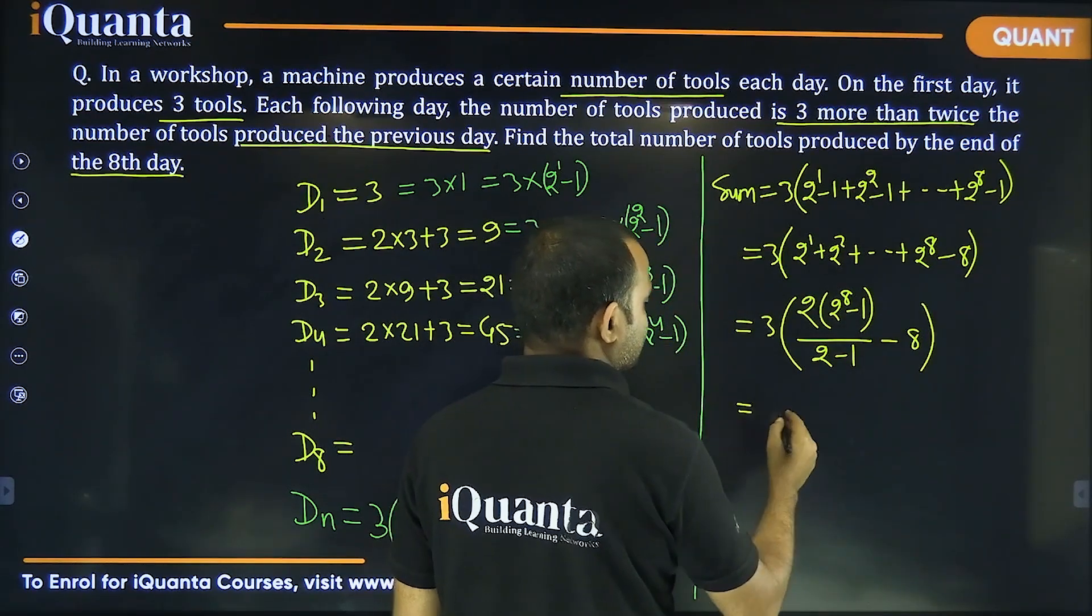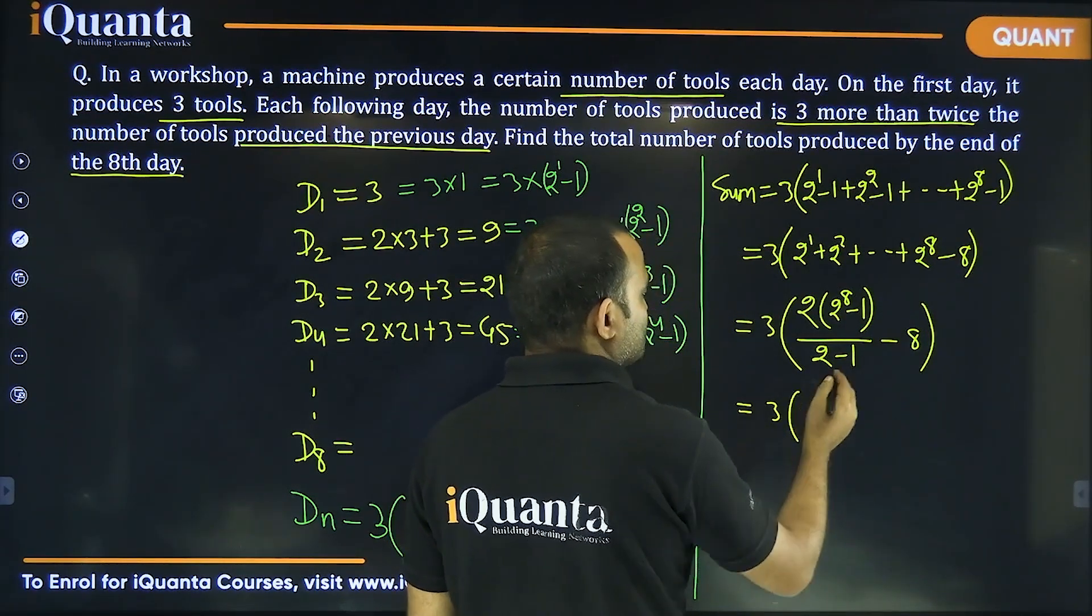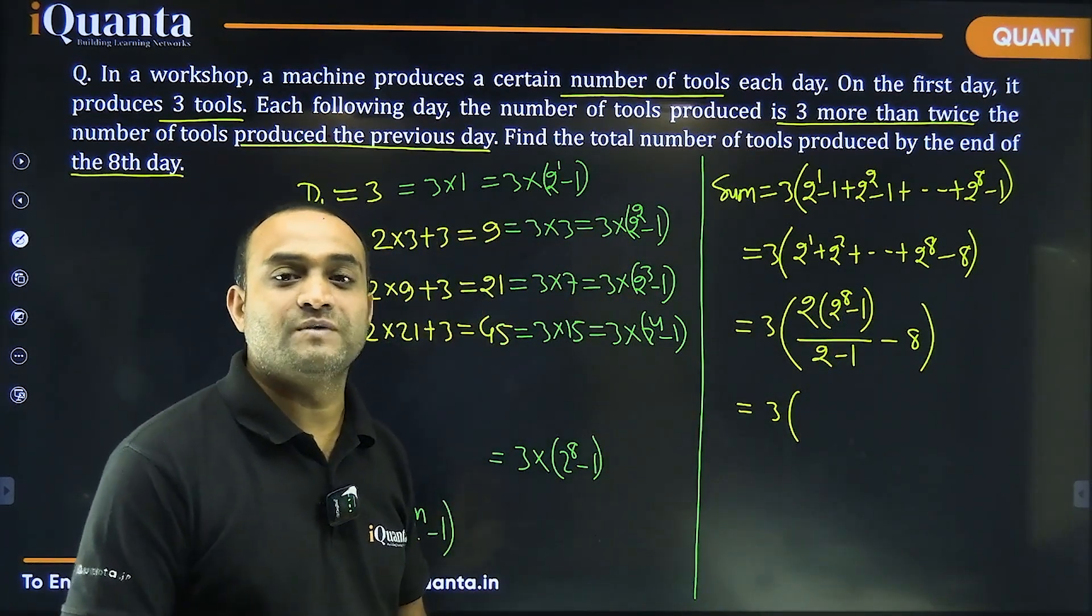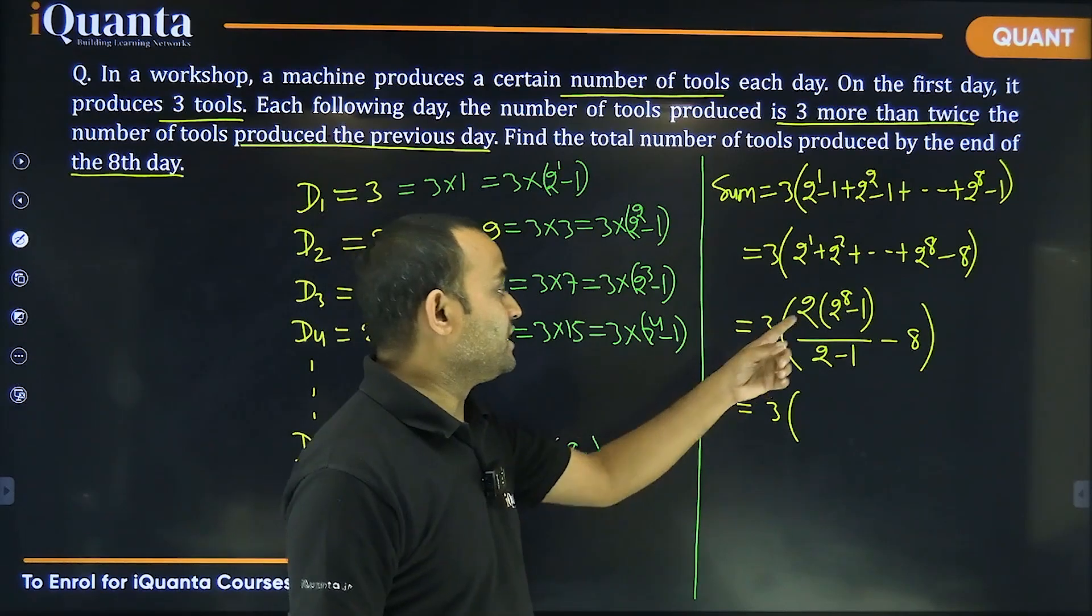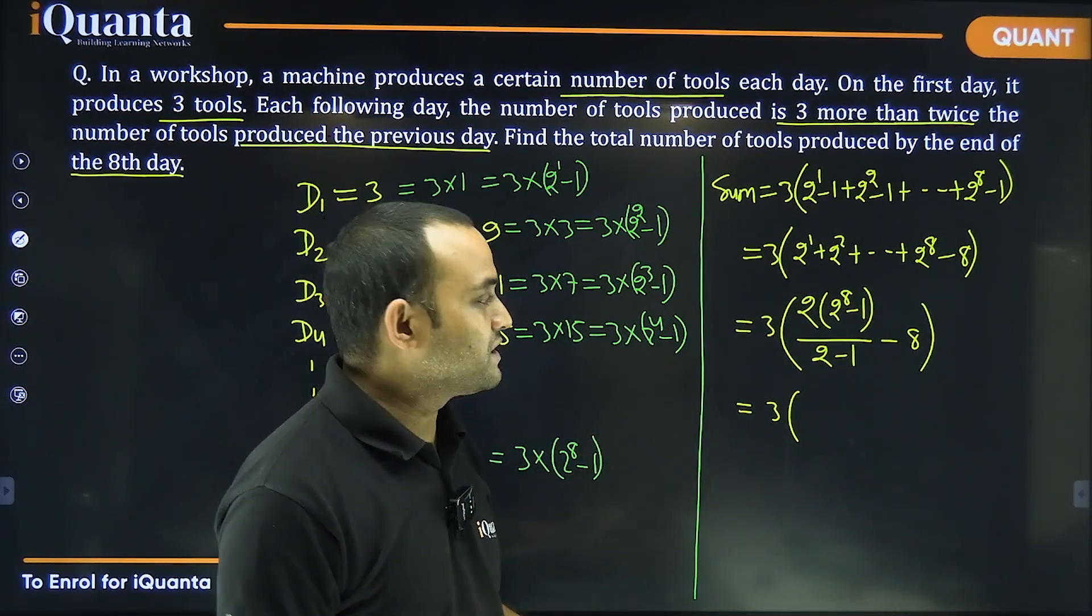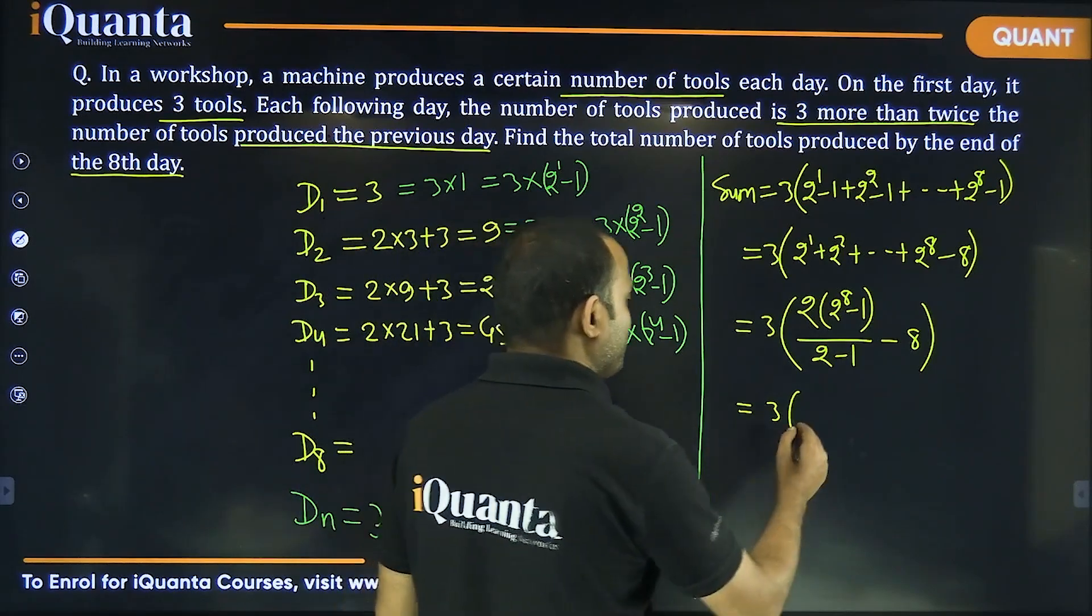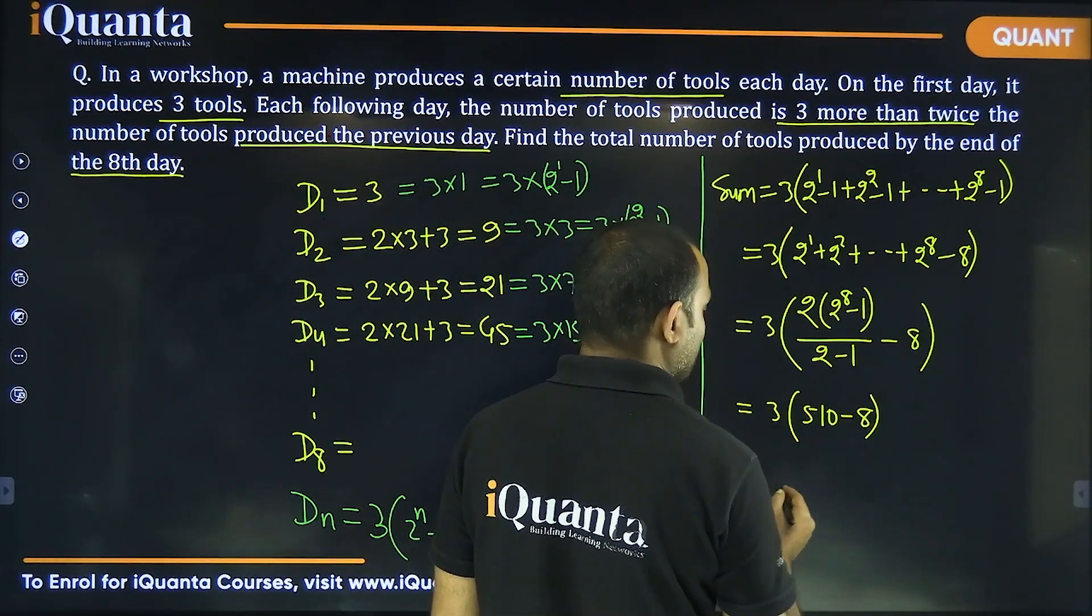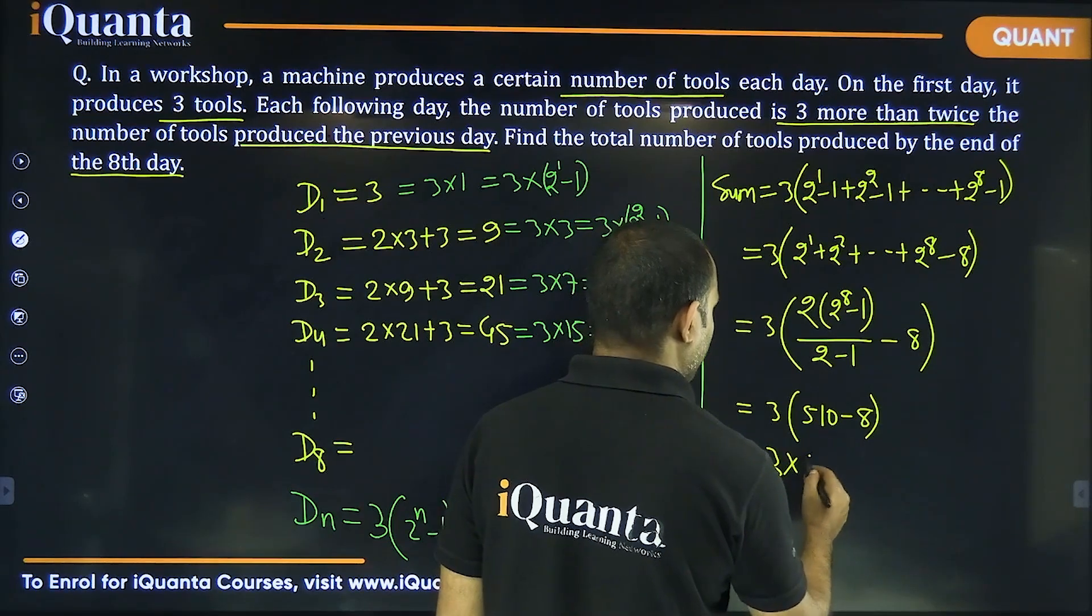And that gives us 3 into, so 2 to the power 8 minus 1, 256 minus 1, 255 into 2, 255 into 2 is 510. So, 510 minus 8 which will be equal to 3 into 510.